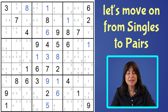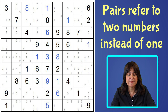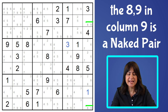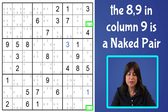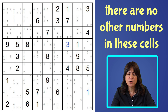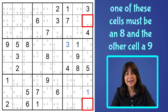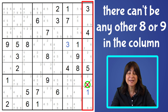So now that we understand singles, let's move on to pairs. Some people call them twins, but let's stick with the pairs term — that means there are just two numbers instead of a single one. Here's an example of a naked pair. The eight and nine in column nine are what I like to refer to as a matching pair, but for the purposes of this video let's call them a naked pair. There are no other numbers in these cells, so they stand out very easily — they are not hidden. Since there are two numbers, the eight and nine, and two cells between them, one of these cells has to be an eight and the other has to be a nine. So there can't be any other eights or nines in the same column, and therefore we can eliminate that eight.